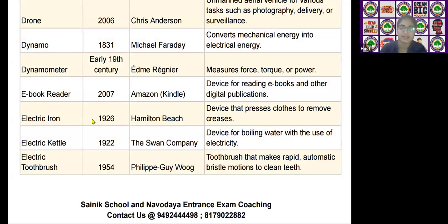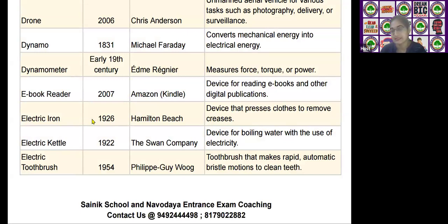The next scientific device is the electric kettle, invented by this Swan company in the year 1922. It is used as a device for boiling water with the use of electricity.